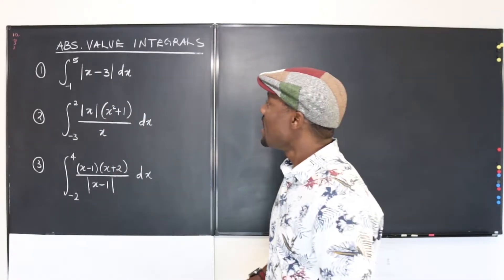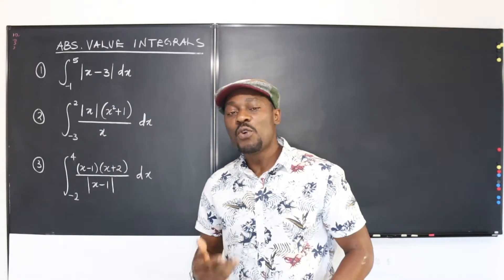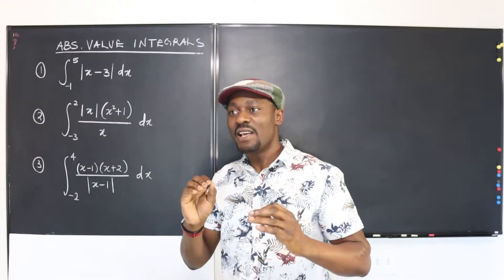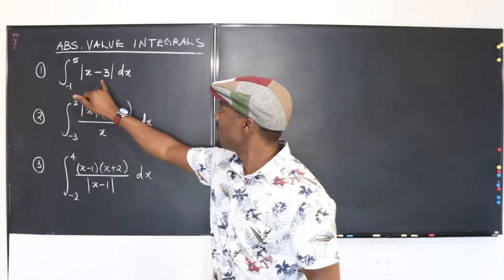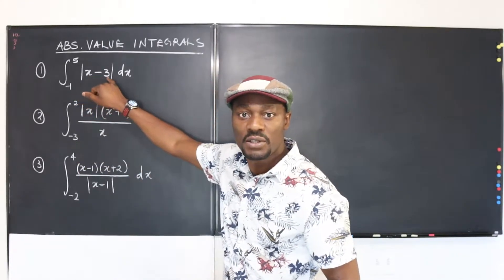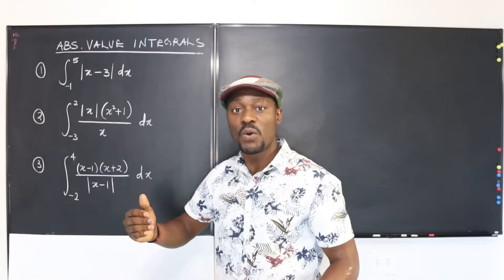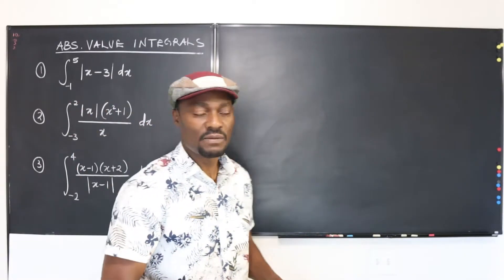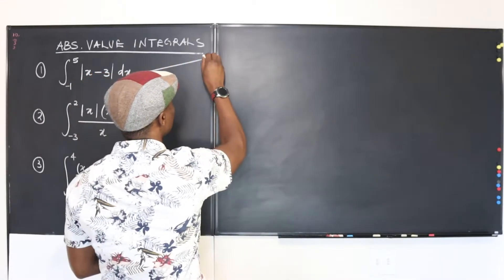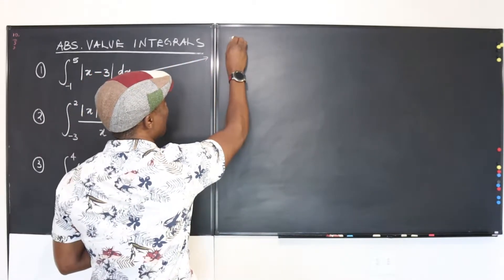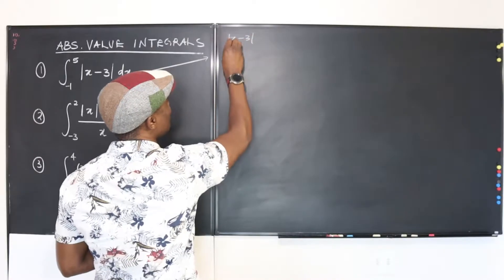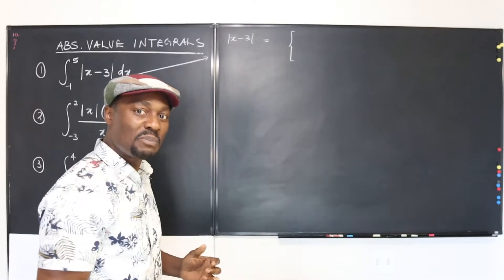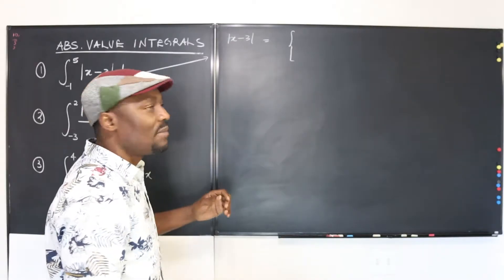Okay, so let's get into the question. You have to first understand that an absolute value function has a consistent meaning. It simply means that what is inside the argument of this function is either positive or negative. So whenever you get a function like this you want to quickly rewrite it, because it's always a piecewise function — there are two options.